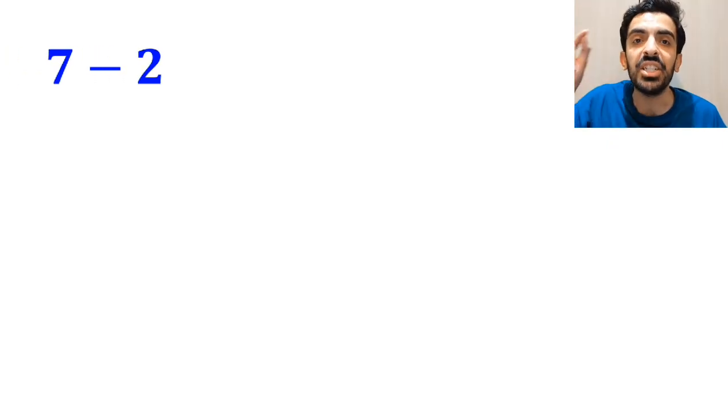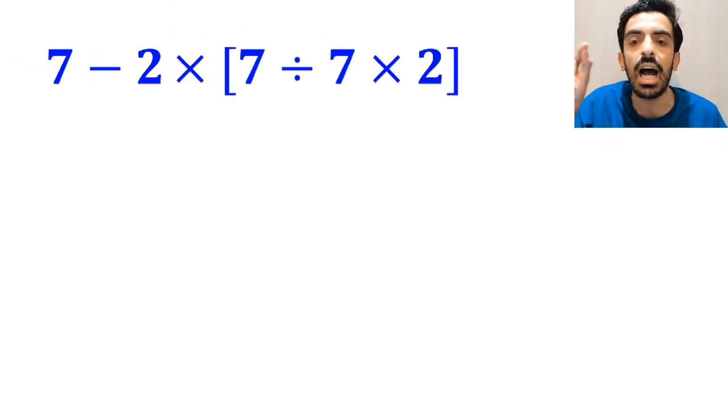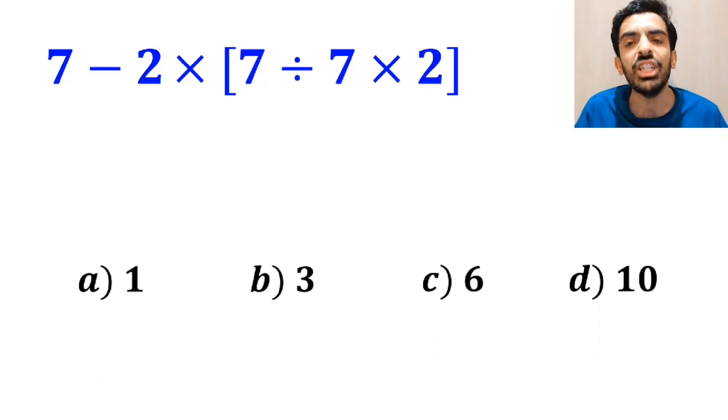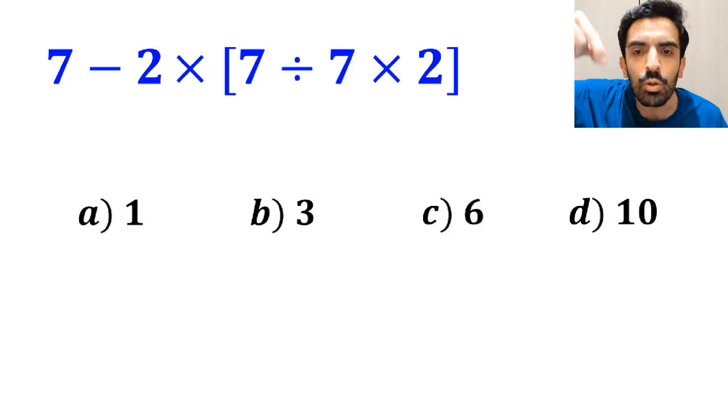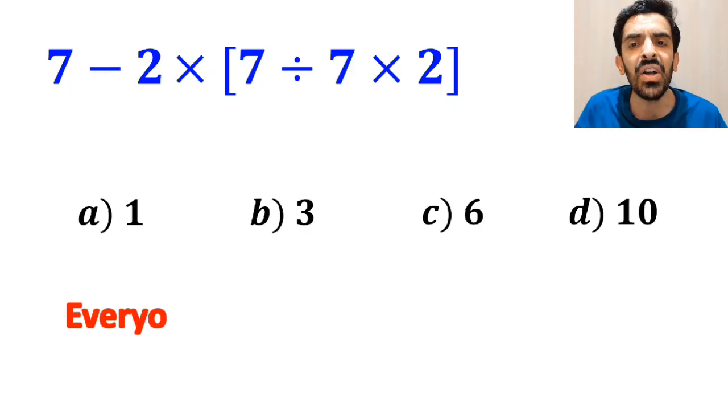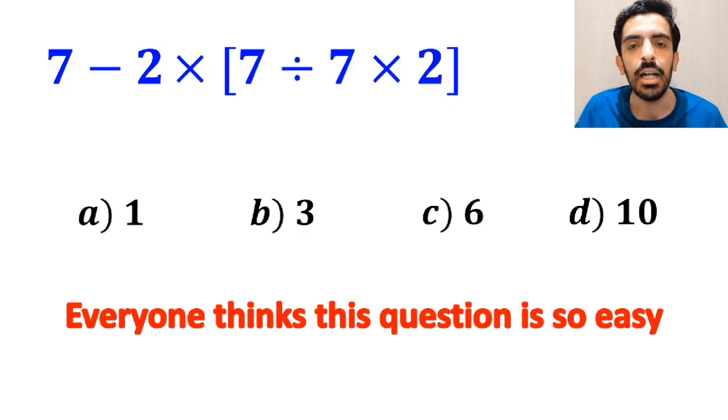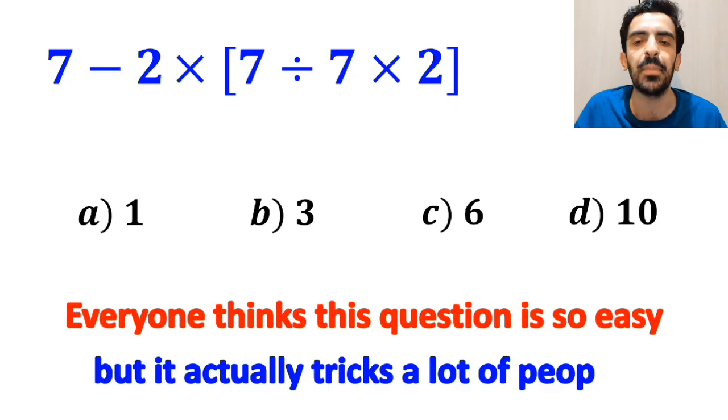What is the value of the expression 7 minus 2 times open bracket 7 divided by 7 times 2 close bracket? Which option do you think is the correct answer to this question? Everyone thinks this question is so easy but it actually tricks a lot of people.